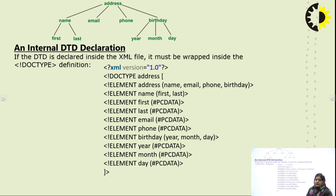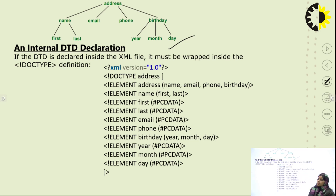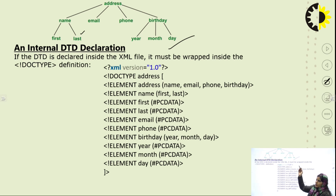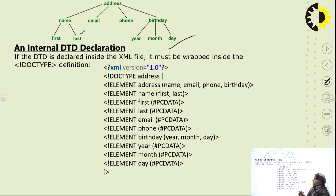The first example is internal DTD declaration. Here the tree is declared with the root node 'address', and the further nodes of that root node are name, email, phone, and birthday. The name node is further divided into two parts: first name and last name. Email and phone have only unique entries and are not further decomposed.